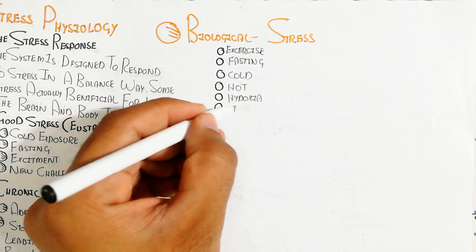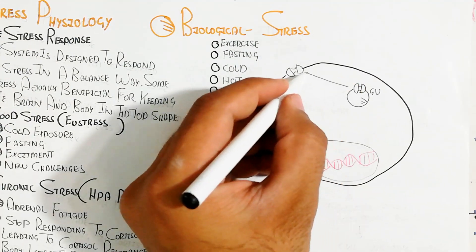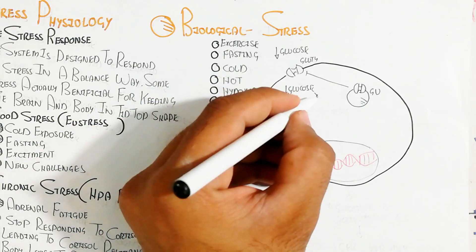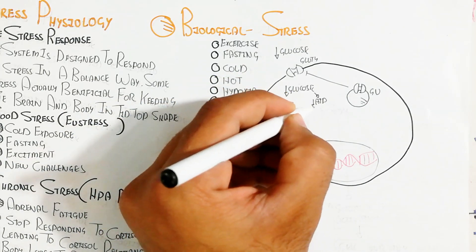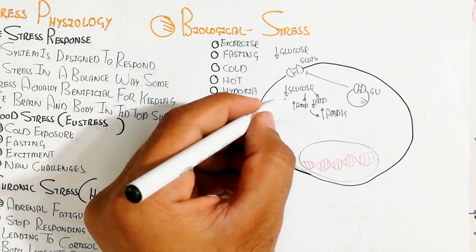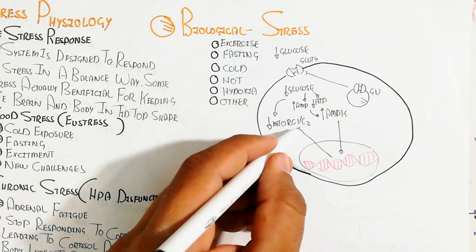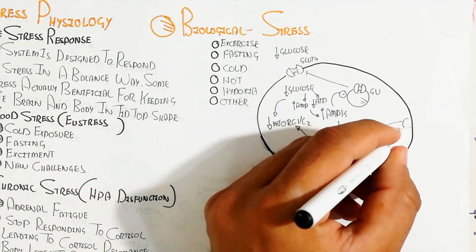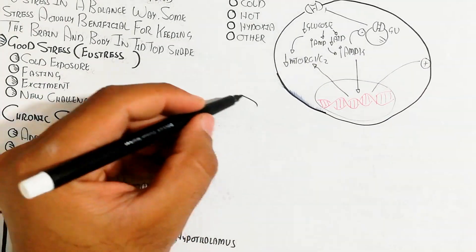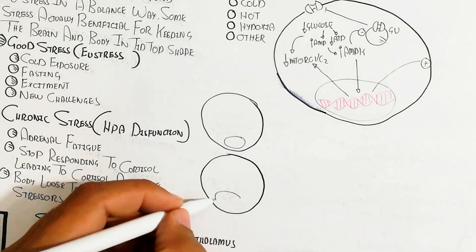At the cellular level, stressors like exercise, fasting, cold, hypoxia, and low glucose levels lead to an increase in AMP while ATP decreases. This increase in AMP activates the AMPK pathway. Additionally, GLUT4 channel vesicles do not bind with the plasma membrane, so glucose does not move inside the cell, and mTORC1 and mTORC2 are inhibited.